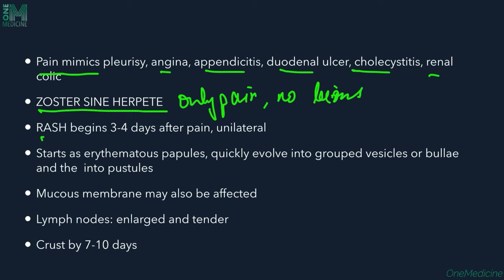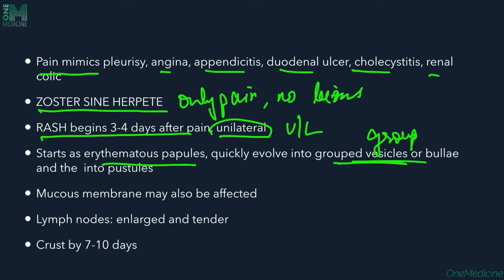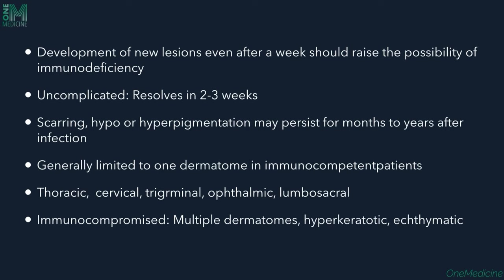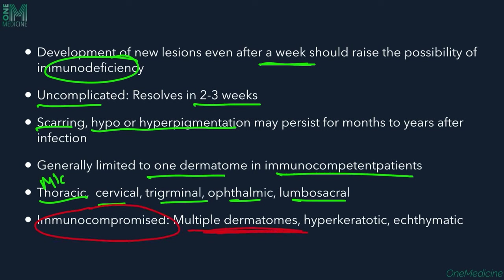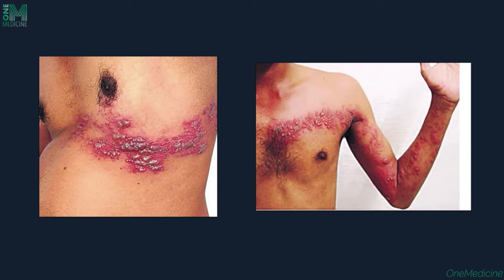Rash begins 3–4 days after pain and is unilateral. Erythematous papules evolve into grouped vesicles or bullae and into pustules. Mucous membranes may also be affected; lymph nodes are enlarged and tender. Crusting occurs by 7–10 days. In uncomplicated cases, resolution occurs in 2–3 weeks, with possible scarring and hypo/hyperpigmentation. Generally limited to one dermatome in immunocompetent patients; most commonly the thoracic dermatome is affected, but cervical, trigeminal, ophthalmic, and lumbosacral dermatomes may also be involved.